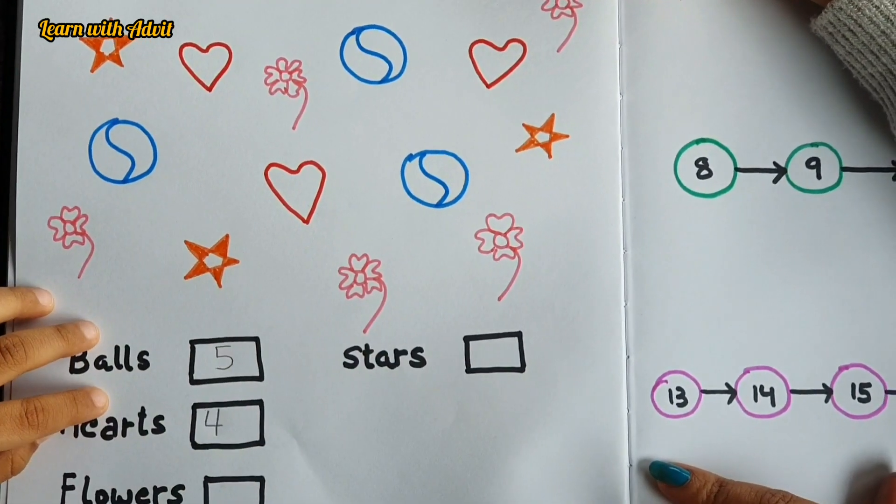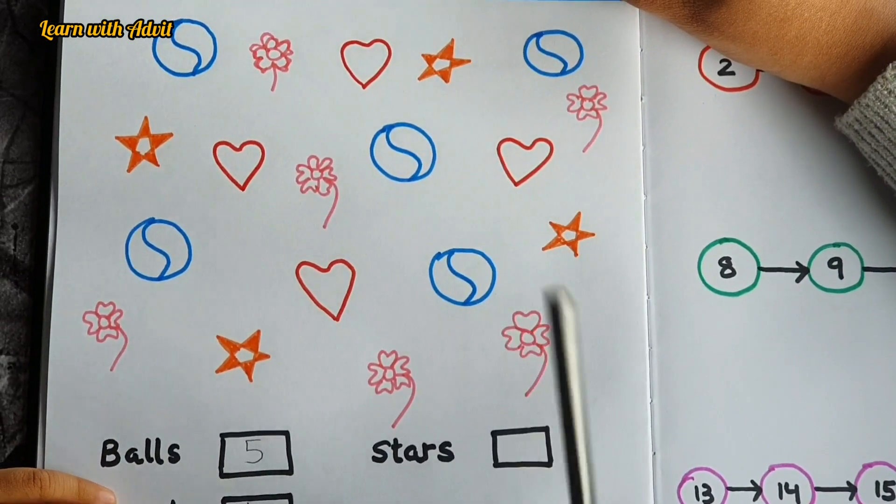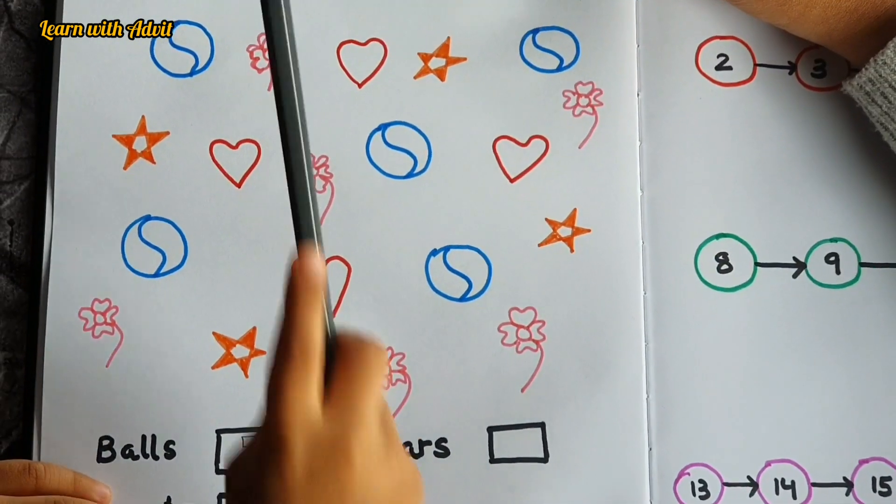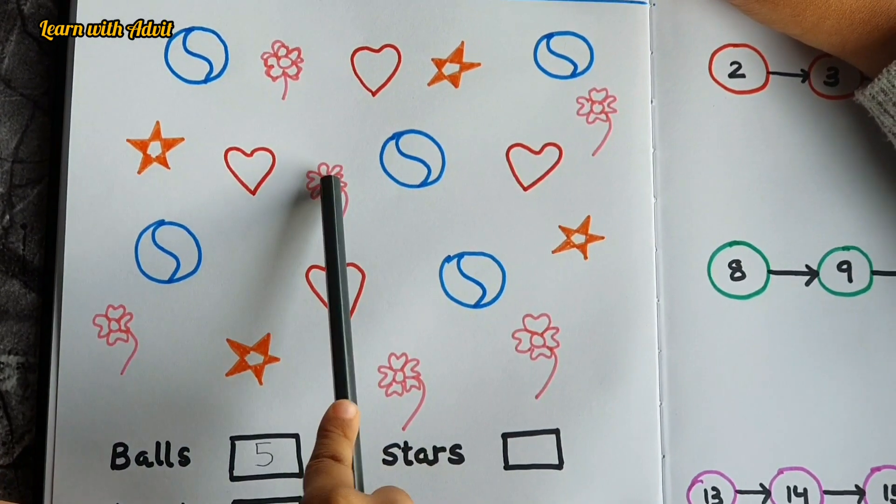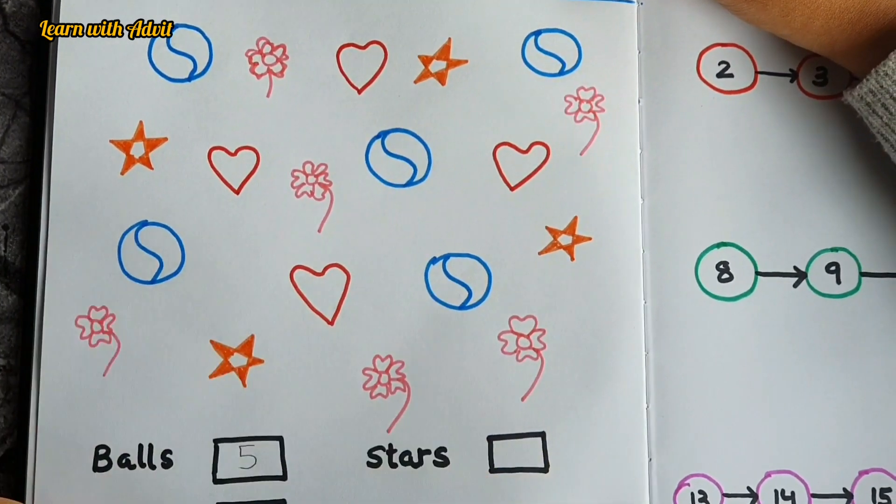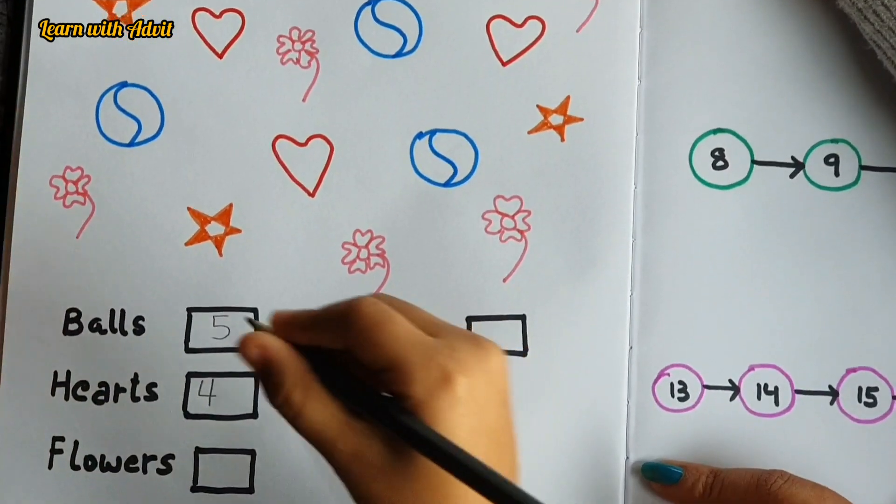How many flowers are there? Flowers, okay. One—always start from the top. One, two, three, four, five, six. Very good, write it down.